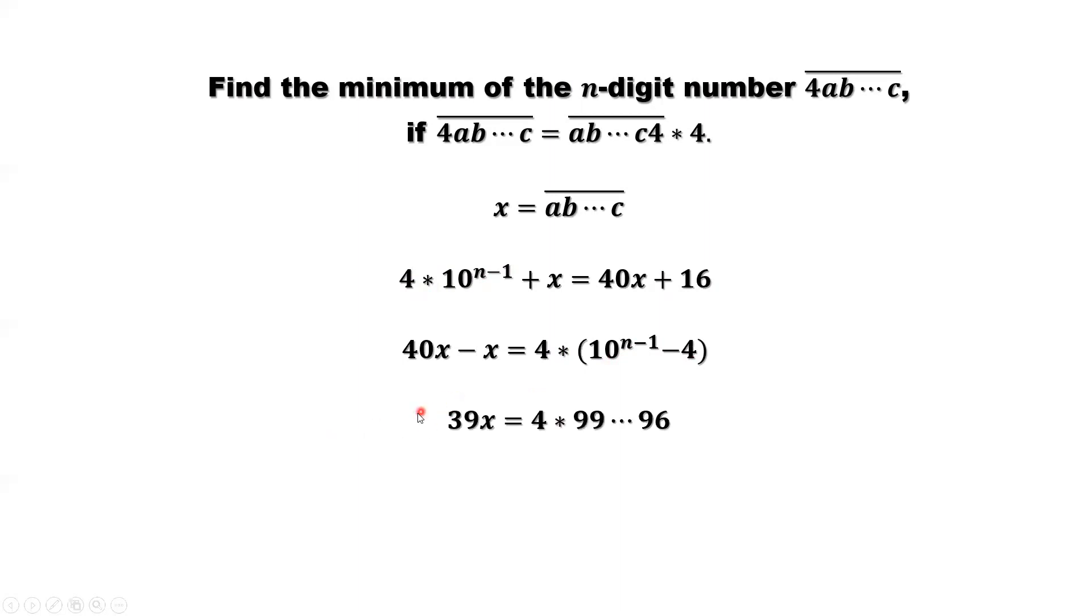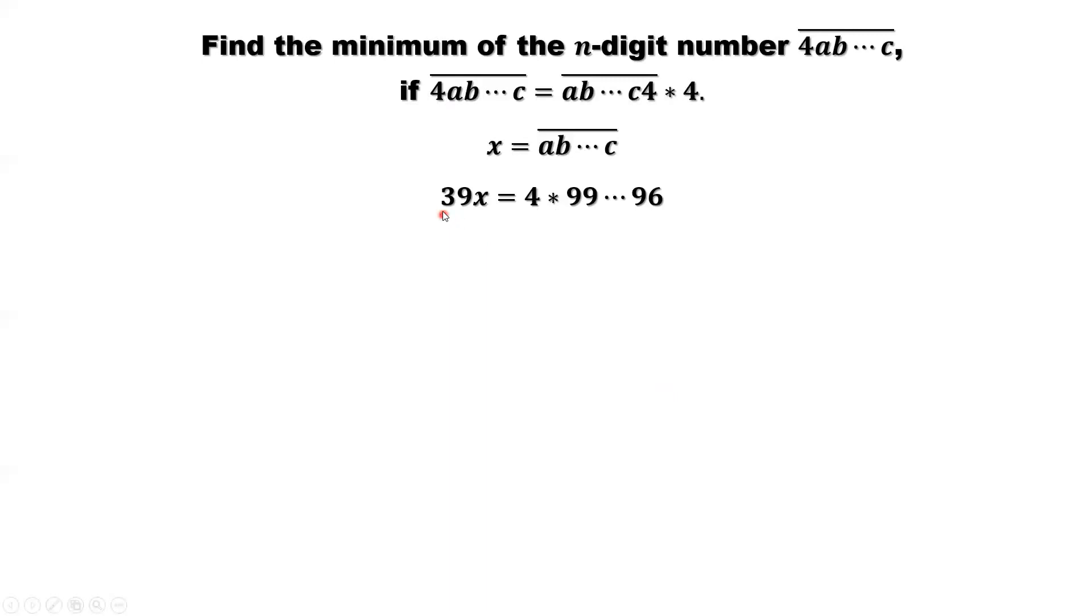Continue to simplify. The left-hand side is 39X. The right-hand side is 4 times this number. First number is 1, after 1 there are n-1 zeros, like 100...0. Last digit is 0 - 4. The second part has this form: 999...96. We can easily see that 39 and the second part are both divisible by 3. Simplify by dividing both sides by 3. We have 13X = 4 × 333...32.